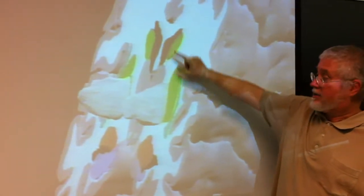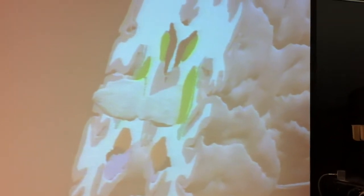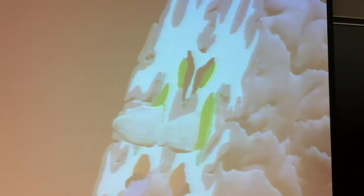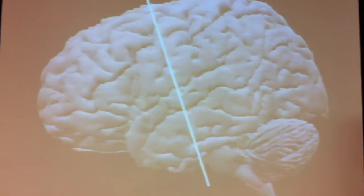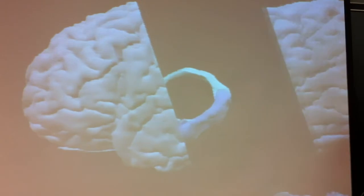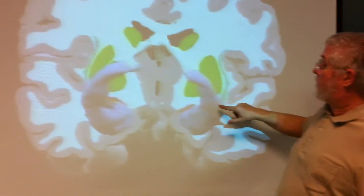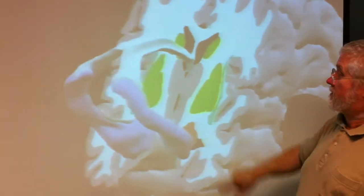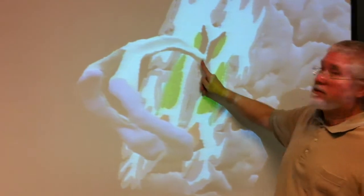And there's caudate nucleus. So in this case, that's the globus pallidus. It's so white. It looks like deer antlers.